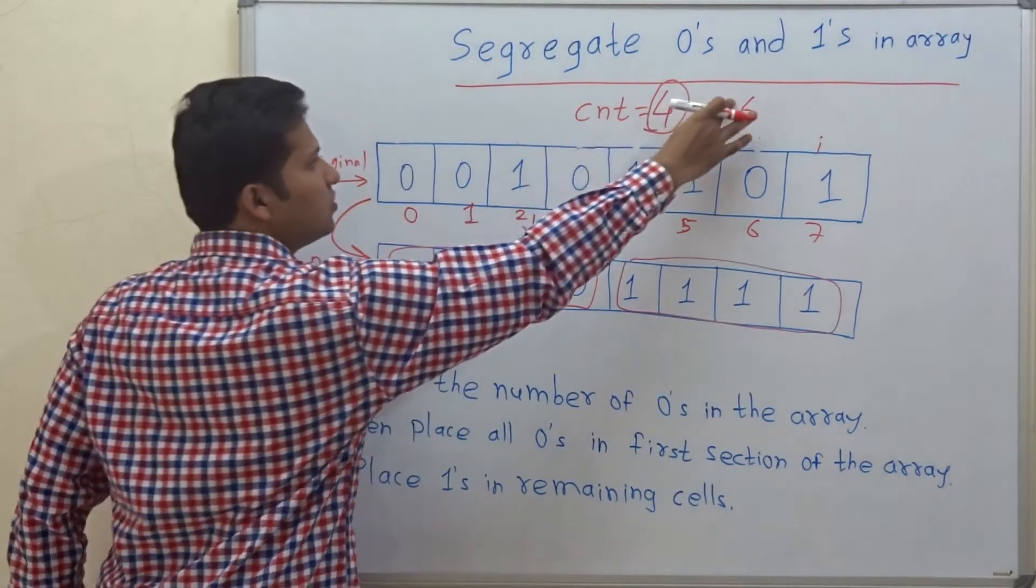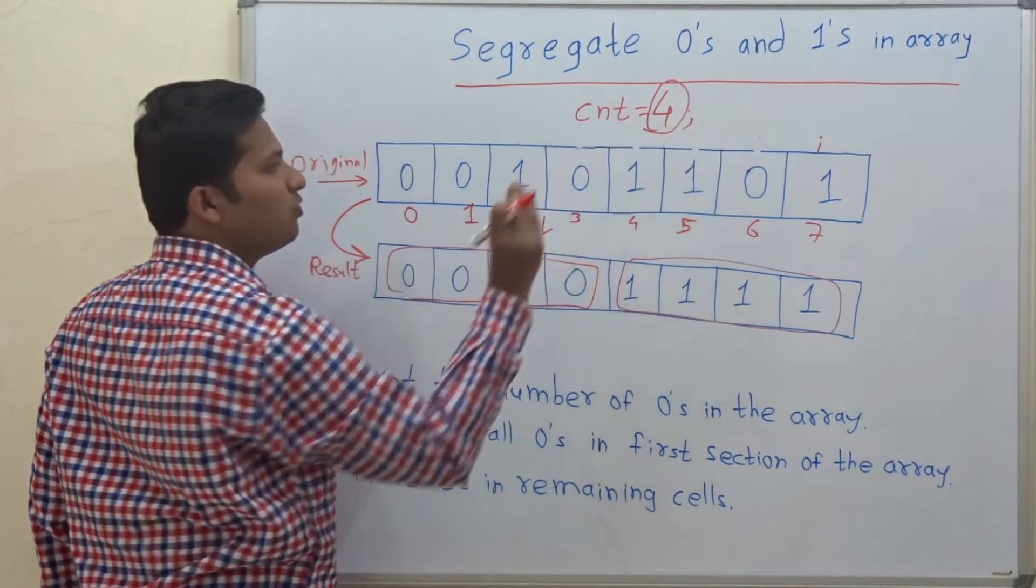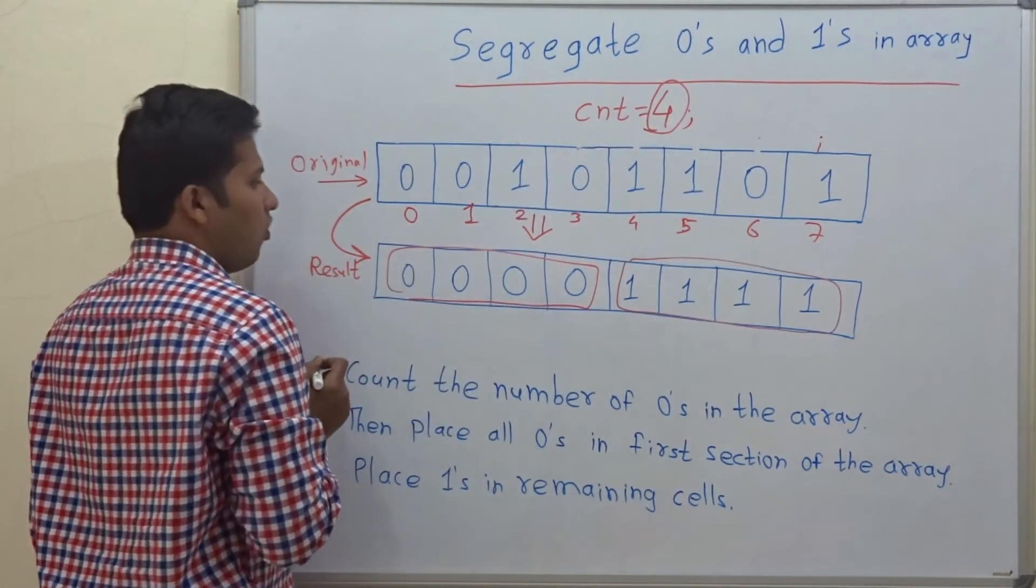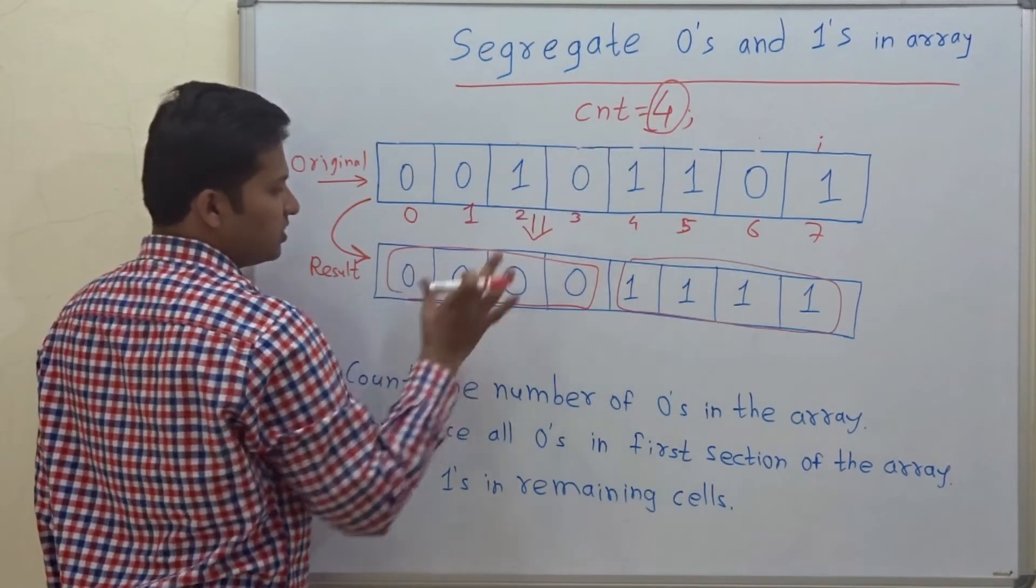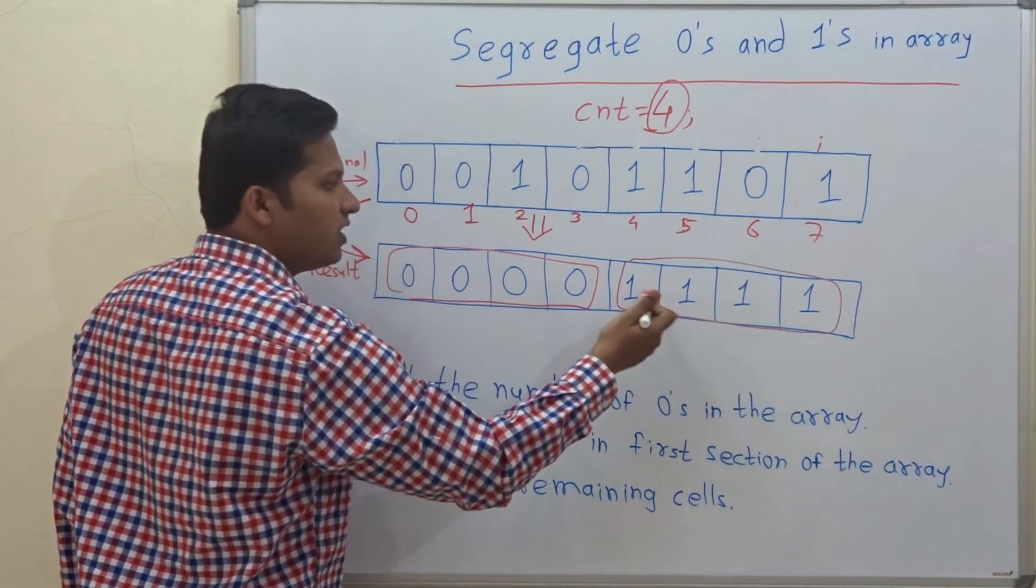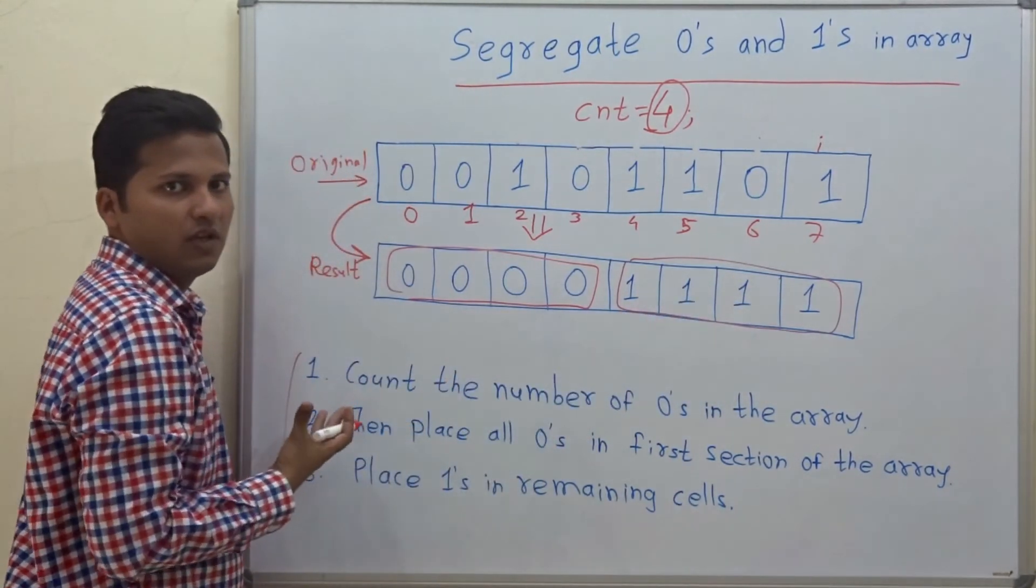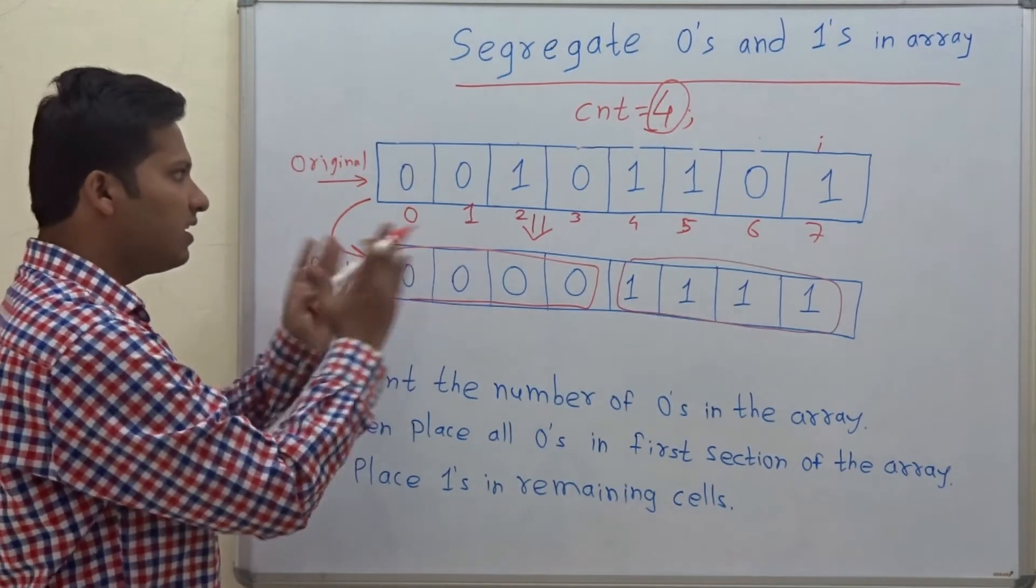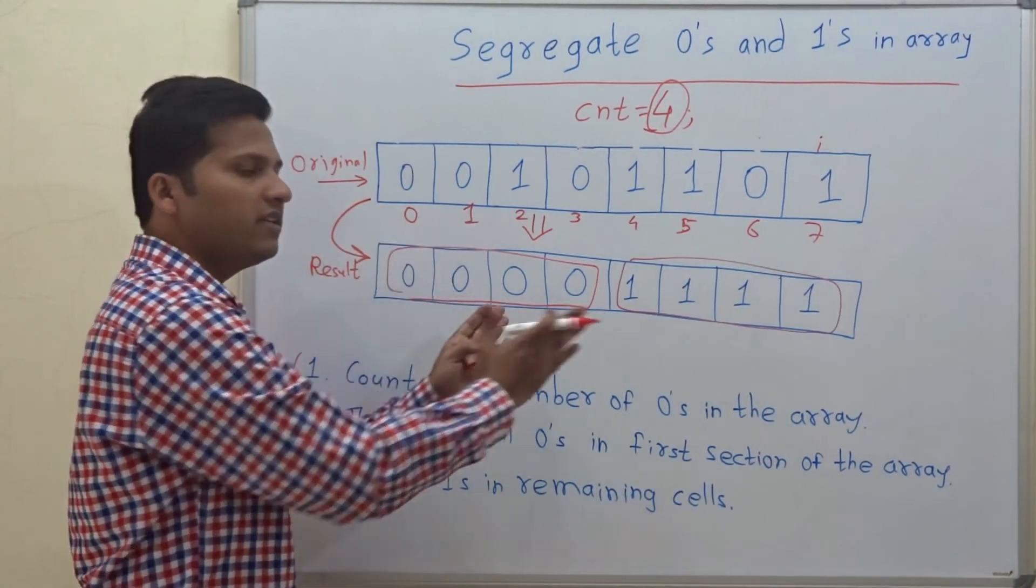So any number of zeros whatever is the counter in the original array. So now first four positions are filled with 0 and all the remaining positions should be filled with 1. So this is how we segregate zeros and ones in an array.